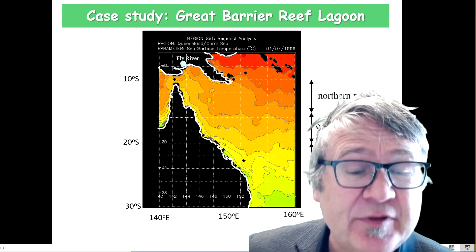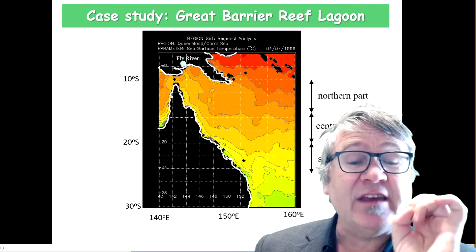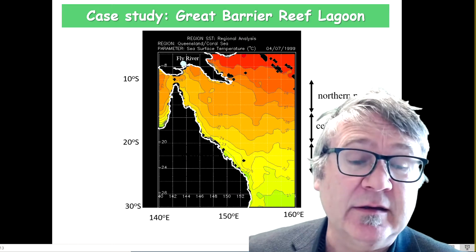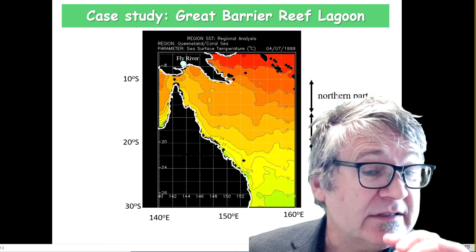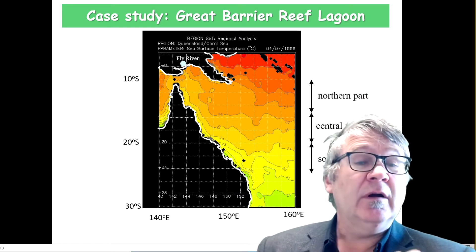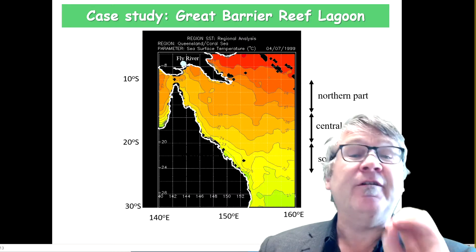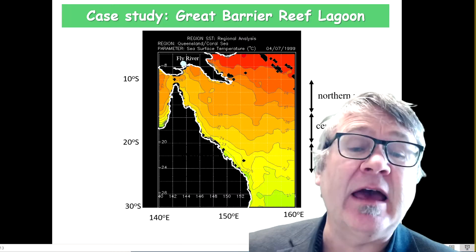You can see the sea surface temperature varies significantly, and this is because of the variation of heat fluxes that you have.